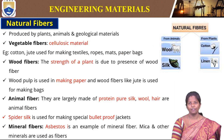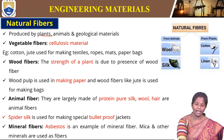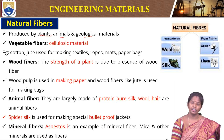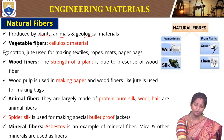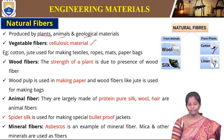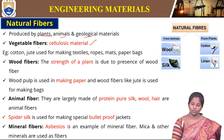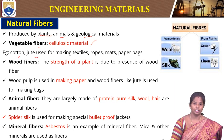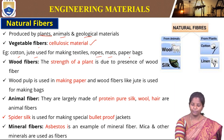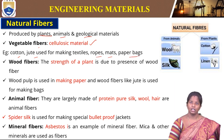Natural fibers are found from plants, animals, and geological materials. There are different types of natural fibers, like vegetable fibers — for example, cellulosic material. Even corn has a fiber coming out of it, which is an example of cellulosic fiber. Cotton and jute are examples for making textiles, ropes, mats, paper bags, etc. These are the vegetable fibers that originate from plants.